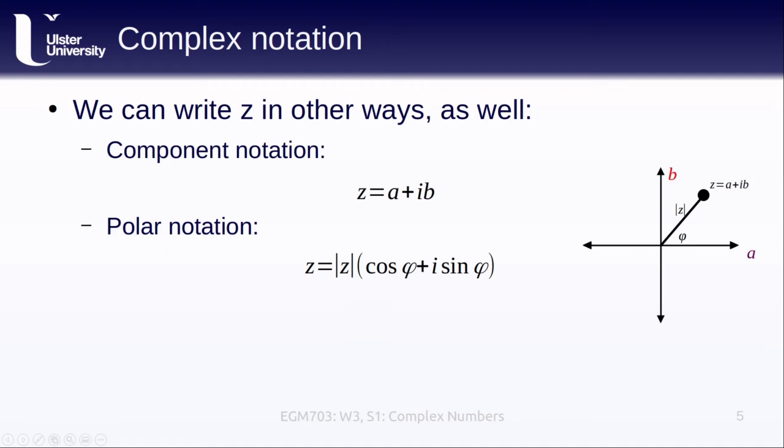So it turns out that this value here, cos(φ) + i·sin(φ), is equal to Euler's number, e, raised to the power of i·φ. And using that identity, we can also write z using Euler notation, where z is equal to the magnitude of z multiplied by e^(iφ).